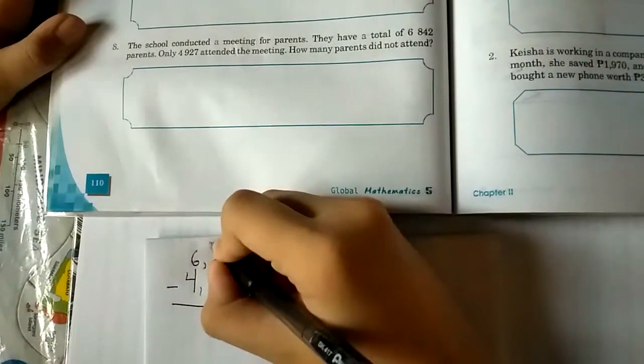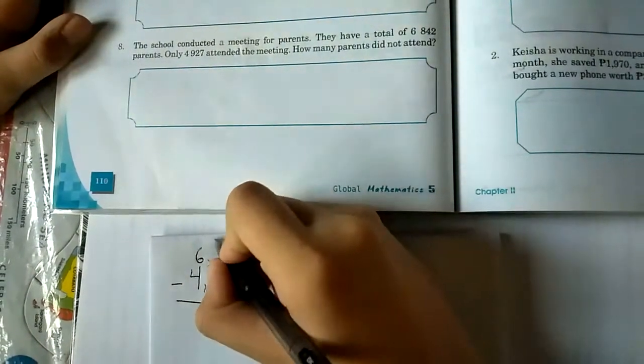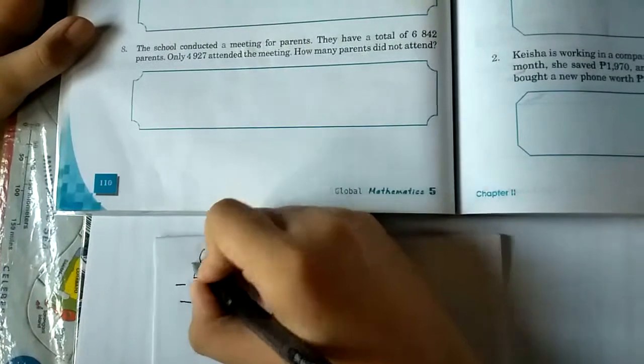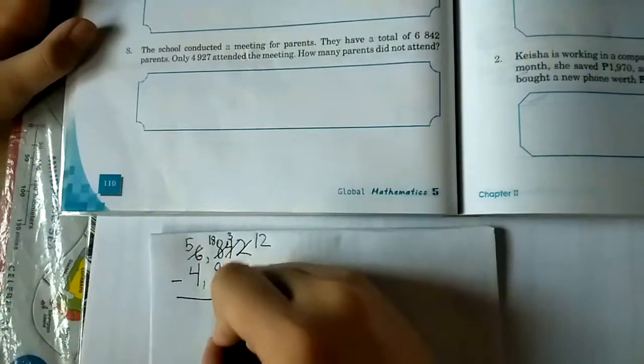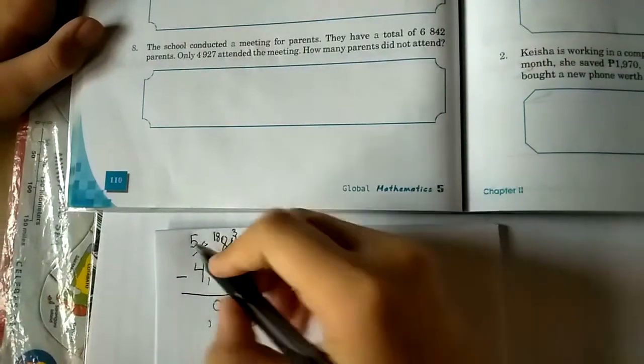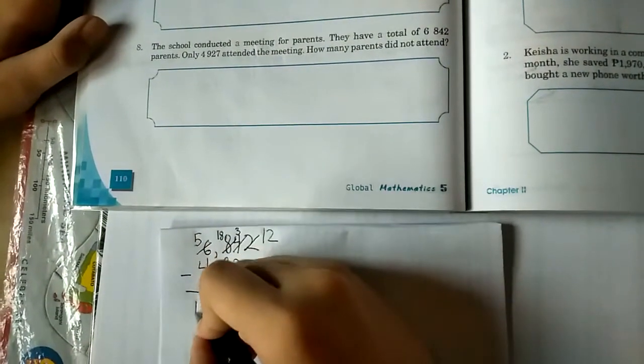8 is going to borrow from 6, so 8 will become 18 and 6 will become 5. 18 minus 9 equals 9. 5 minus 4 equals 1.